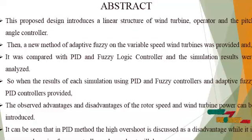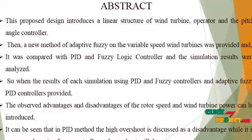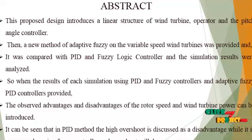Simulations using PID, fuzzy controllers, and adaptive fuzzy PID controllers are provided. The observed advantages and disadvantages regarding rotor speed and wind turbine power are introduced. In the PID method, high overshoot is seen as a disadvantage, while using a fuzzy controller reduces the overshoot. The time to reach sustained speed increases slightly, and the adaptive fuzzy PID controller provides less overshoot with good and effective system response performance.